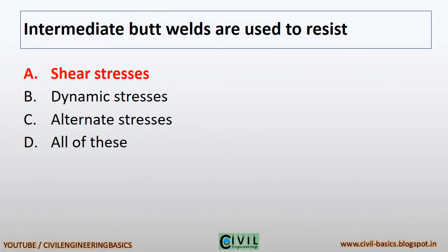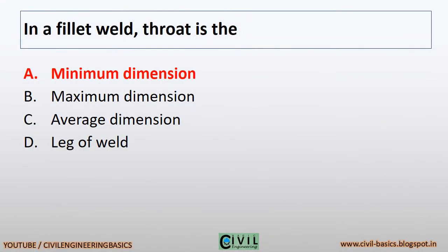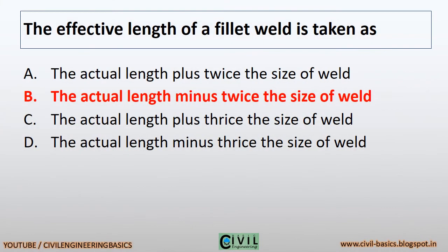Intermediate butt welds are used to resist shear stresses. In a fillet weld, the throat is the minimum dimension. The effective length of a fillet weld is taken as the actual length minus twice the size of weld.